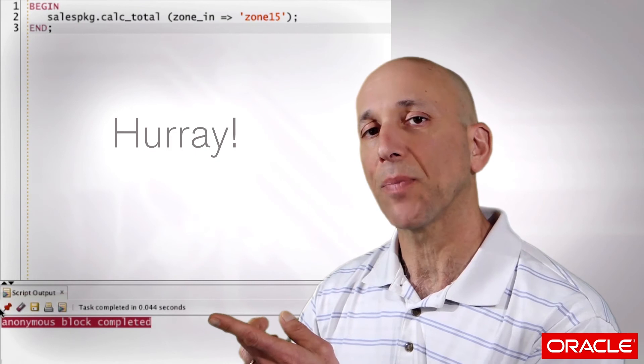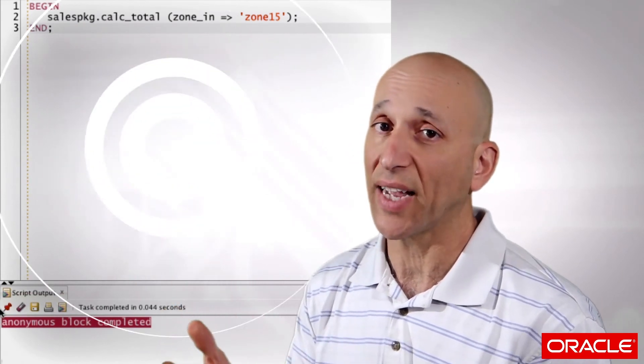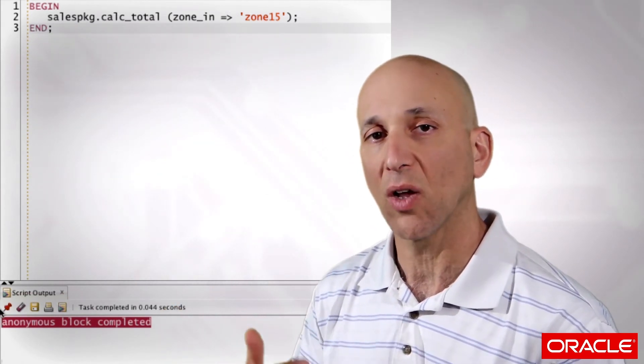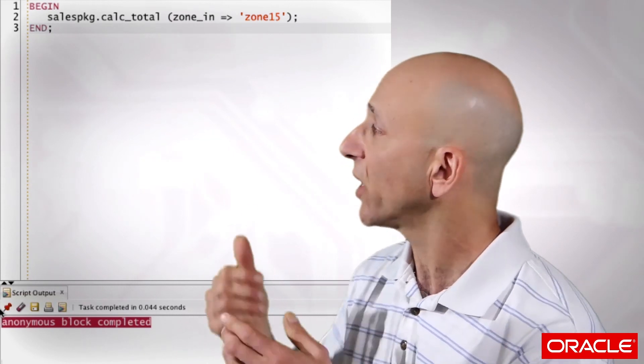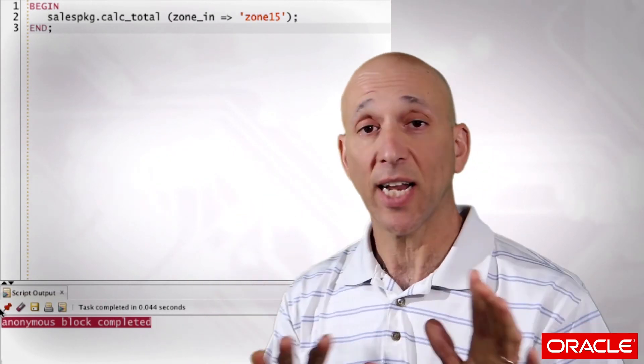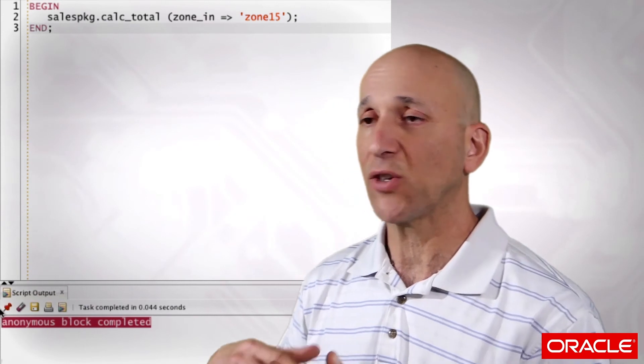So here's an example where my overloading is designed such that the only way I can call one of these two subprograms is by using name notation. Now, name notation is a great feature and it makes your code more readable.